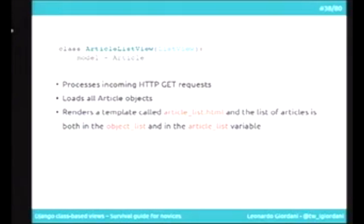Now you can understand why those three things are true about my code: it processes incoming HTTP GET requests because somewhere in the class hierarchy someone defines the GET method — this time it's ListView; it loads all article objects because get_queryset performs an .all() call on the default manager; and it renders a template called article_list.html, given by get_template_names. The list of articles is available in both object_list and article_list, given by get_context_data.